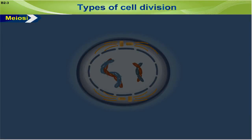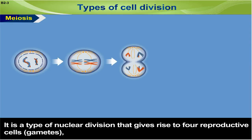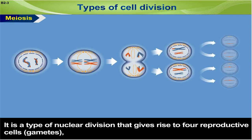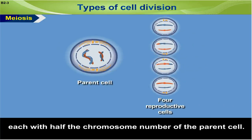Meiosis is a type of nuclear division that gives rise to four reproductive cells called gametes, each with half the chromosome number of the parent cell.